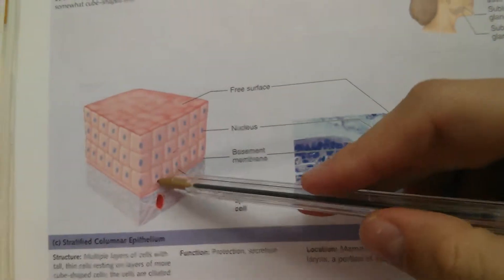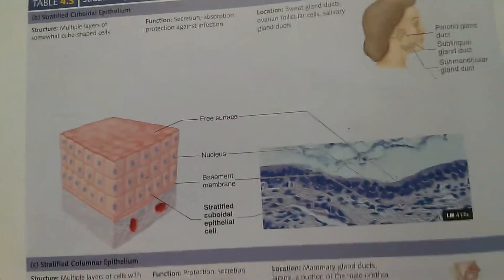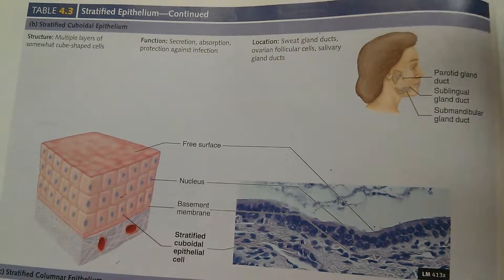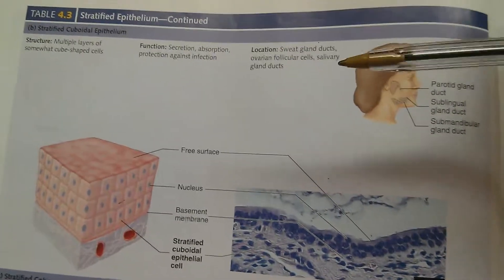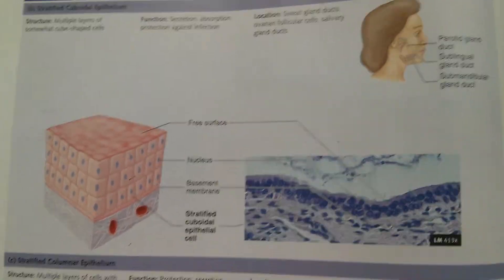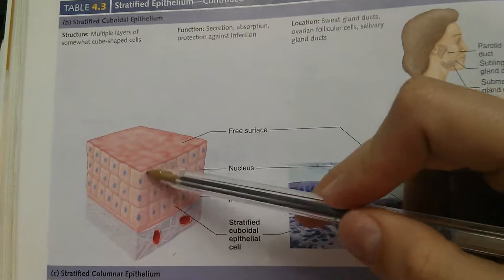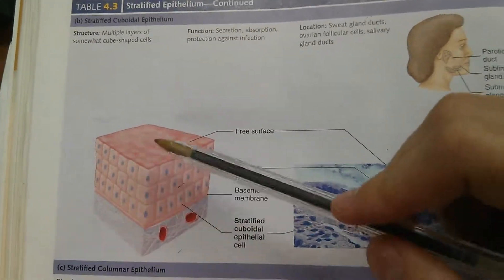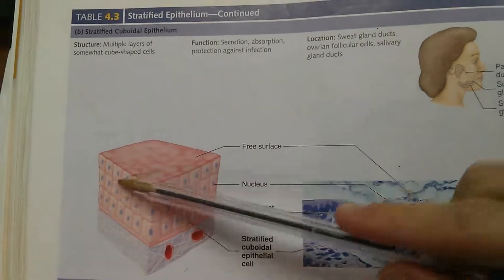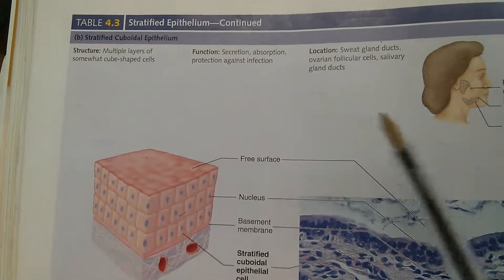Stratified cuboidal epithelium has more than one layer and is made of cube-shaped cells. These make up the glands — like the pituitary gland, the parotid gland, and all those glands that secrete things. Secreting is kind of like squeezing a gusher candy — the liquid squirts out. You can think of a gland as a big pack of gushers, all of them together, responsible for secreting things like hormones, sweat, saliva, or mucus.